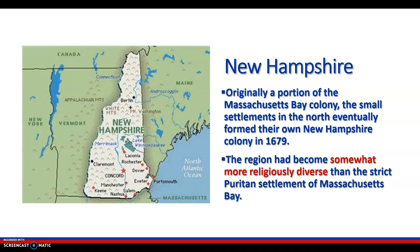New Hampshire. Originally a portion of the Massachusetts Bay Colony, the small settlement in the north eventually formed its own New Hampshire colony in 1679, somewhat more religiously diverse than the strict Puritans.